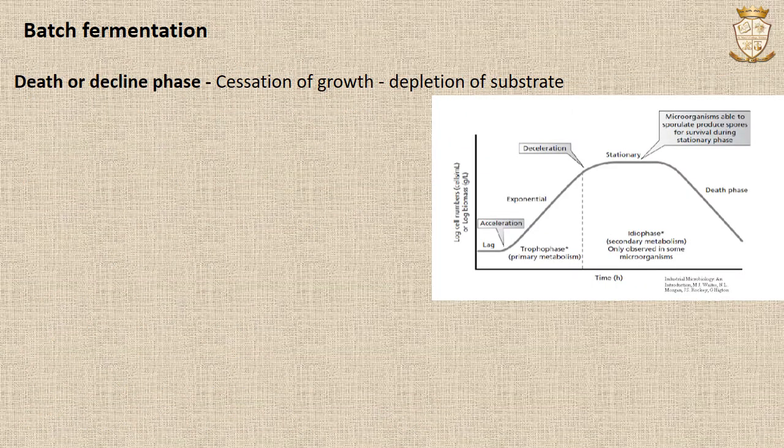After the stationary phase, the death phase or decline phase occurs. The decrease in growth rate and the cessation of growth due to the depletion of substrate may be explained using the Monod equation.